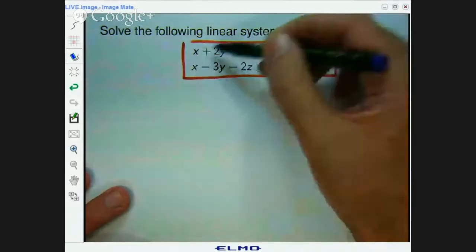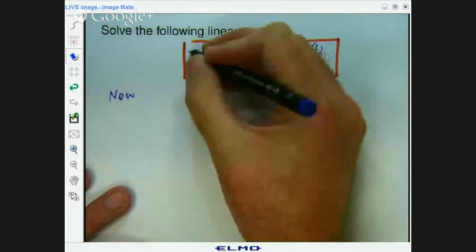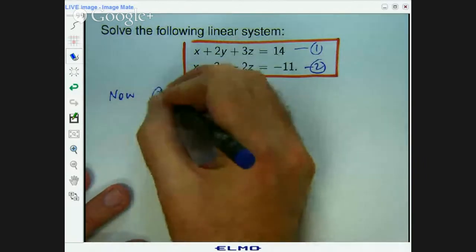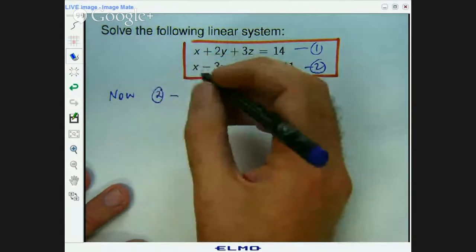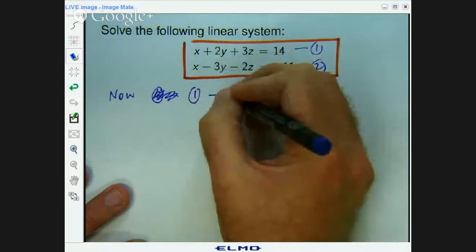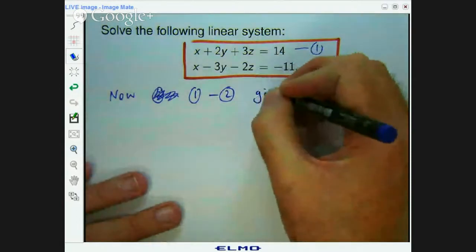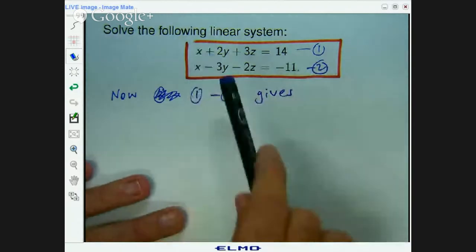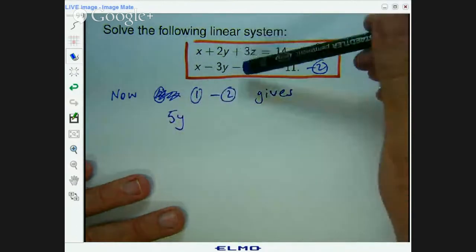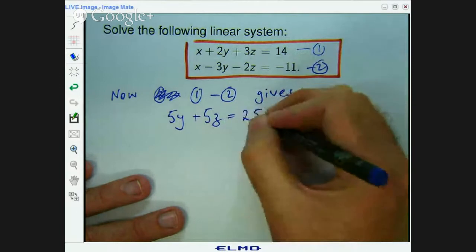Now what I'm going to do is eliminate the easiest variable or the simplest variable first. I'm going to get rid of the x's first, purely because there's a one x there and a one x there. I can take one equation away from the other equation. So I'm going to take equation two away from equation one. You could do it the other way, it doesn't matter, but that way is the way I'm going to do it. So the x's will cancel out. You'll get 2y minus negative 3y, which is 5y. 3z minus negative 2z, which is 5z. And you get 14 minus negative 11, that's going to be 25.